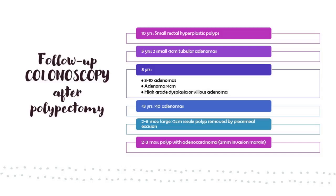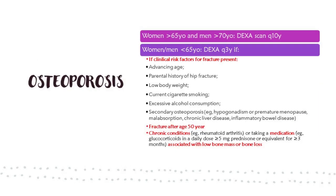Familial colorectal cancer syndromes: FAP is autosomal dominant with APC gene mutation — thousands of polyps before age 20, start screening at age 10, repeat yearly. MAP is a milder version of FAP — colorectal cancer in the 40s, start screening at age 20, repeat yearly. HNPCC (Lynch syndrome): start colonoscopy at age 35, repeat yearly; for all other cancers associated with Lynch syndrome, start screening at age 30. Repeat colonoscopy less than three years if more than ten adenomas found; every two to six months for large sessile polyp removed by piecemeal excision; every two to three months if polyp shows adenocarcinoma with two-millimeter invasion margin.